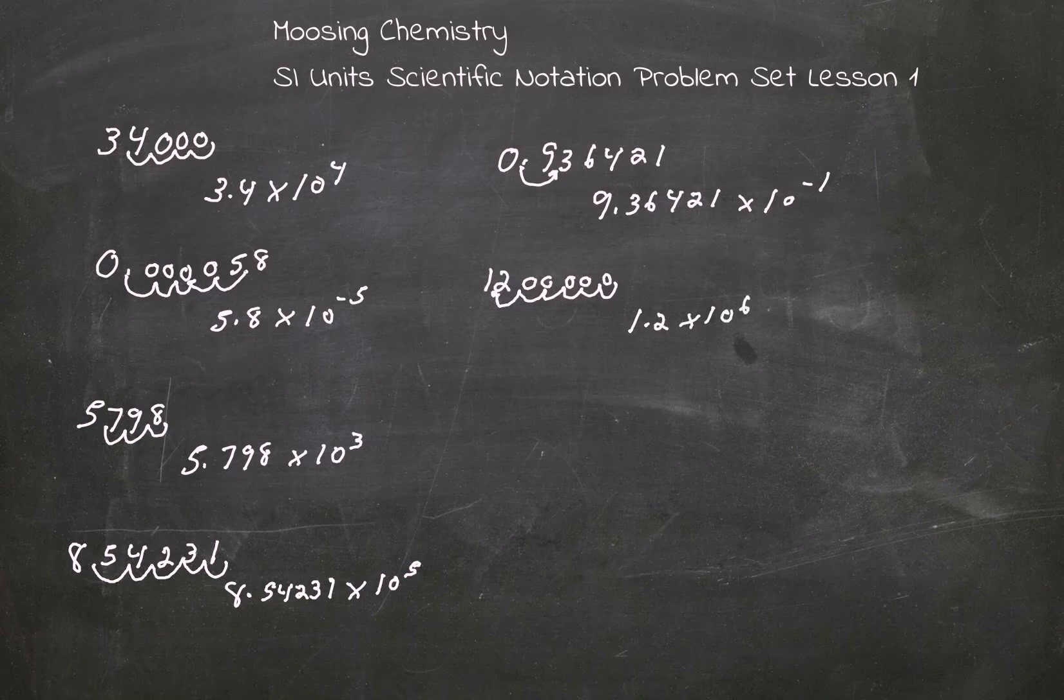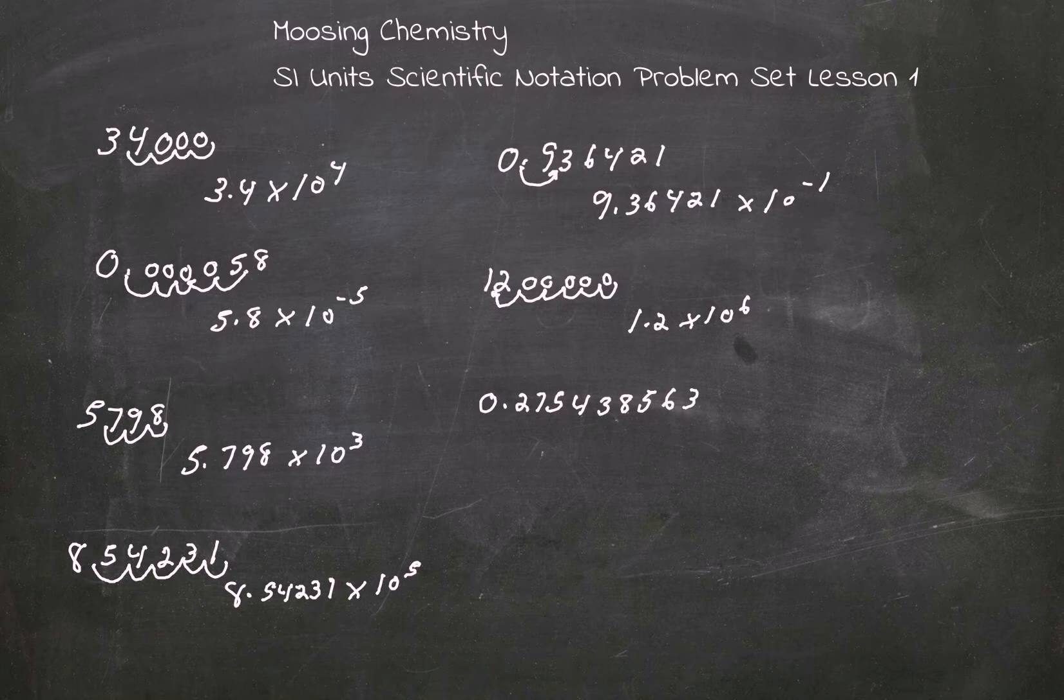So we're going to look at this one here. 0.275, 4, 3, 8, 5, 6, 3. We're going to move it over 1. This is 2.7543856 3 times 10 to the negative 1.